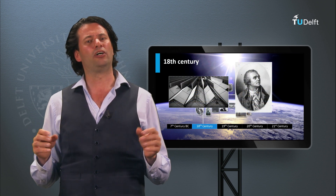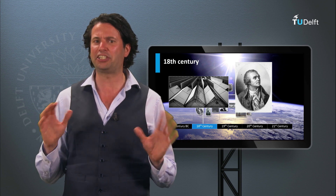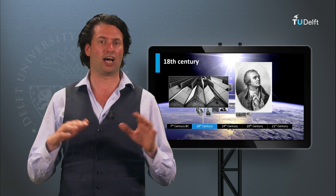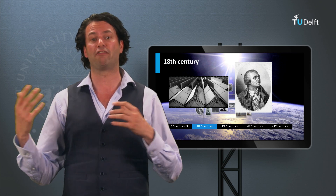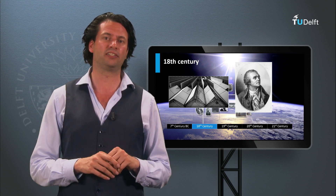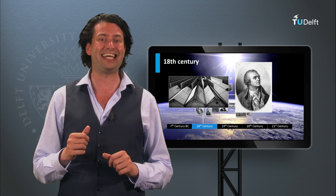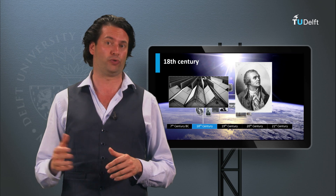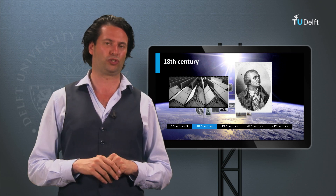In the 18th century, de Saussure built heat traps, which are a kind of miniature greenhouses. He constructed hot boxes consisting of a glass box within another bigger glass box, up to even 5 boxes. When exposed to direct solar irradiation, the temperature in the inner bottom box rose up to 108 degrees Celsius, warm enough to boil water and cook food. These boxes can be considered as the world's first solar collectors.